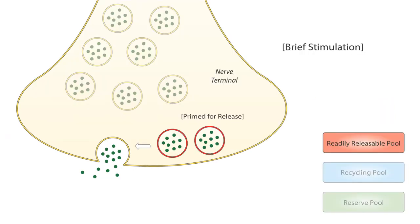So the readily releasable pool consists of a subset of vesicles that are already docked or attached to the presynaptic membrane and as such are immediately available for release on stimulation. These vesicles are actually docked in special locations called active zones of release, which is where preferential fusion of synaptic vesicles occurs.